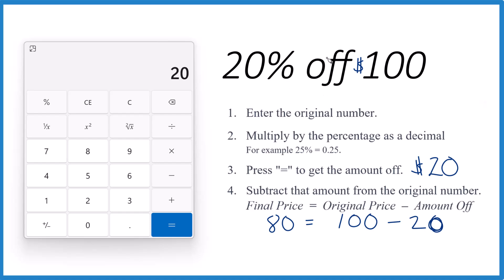So when you take 20% off $100, it's going to cost $80. You'll save $20.